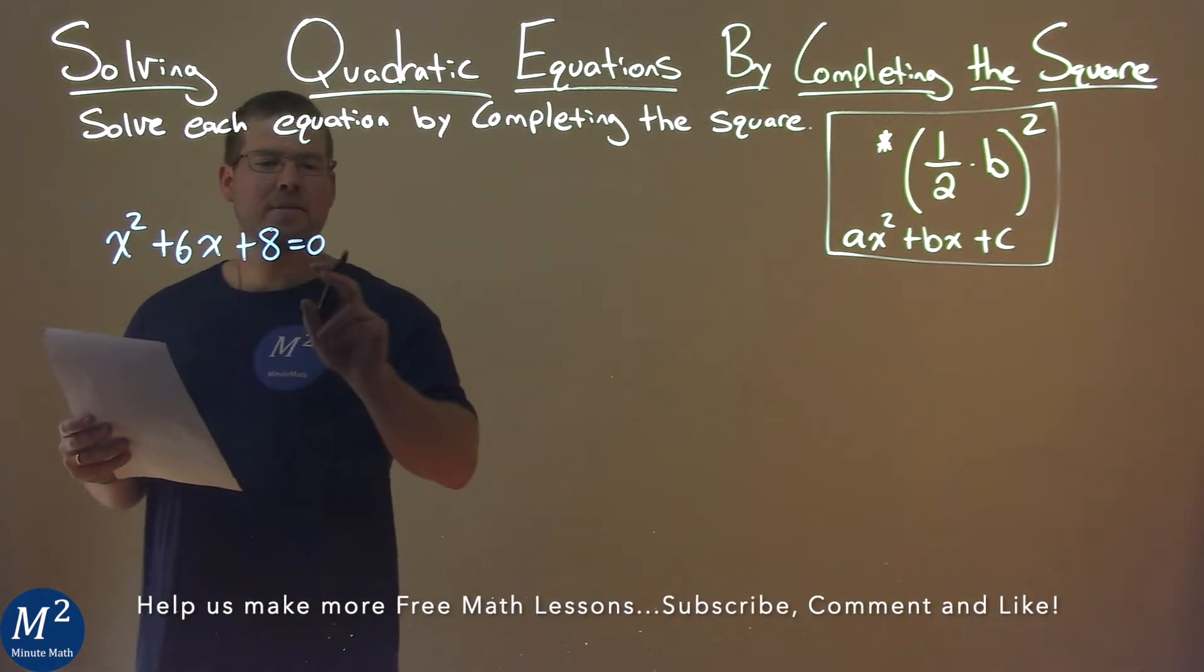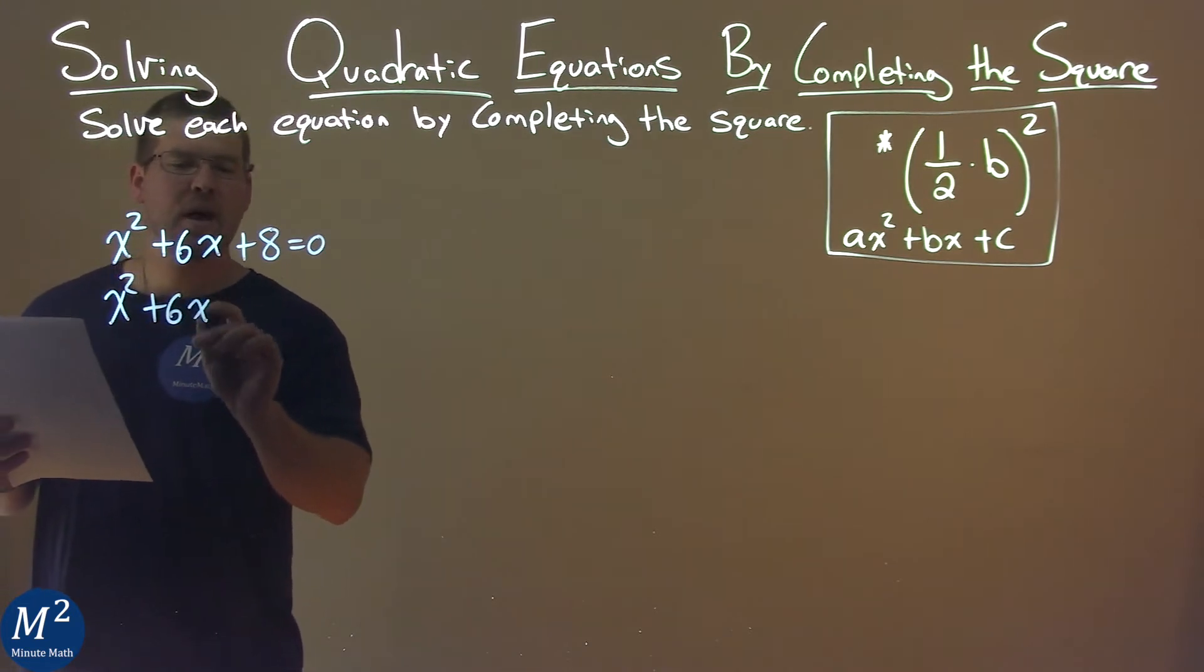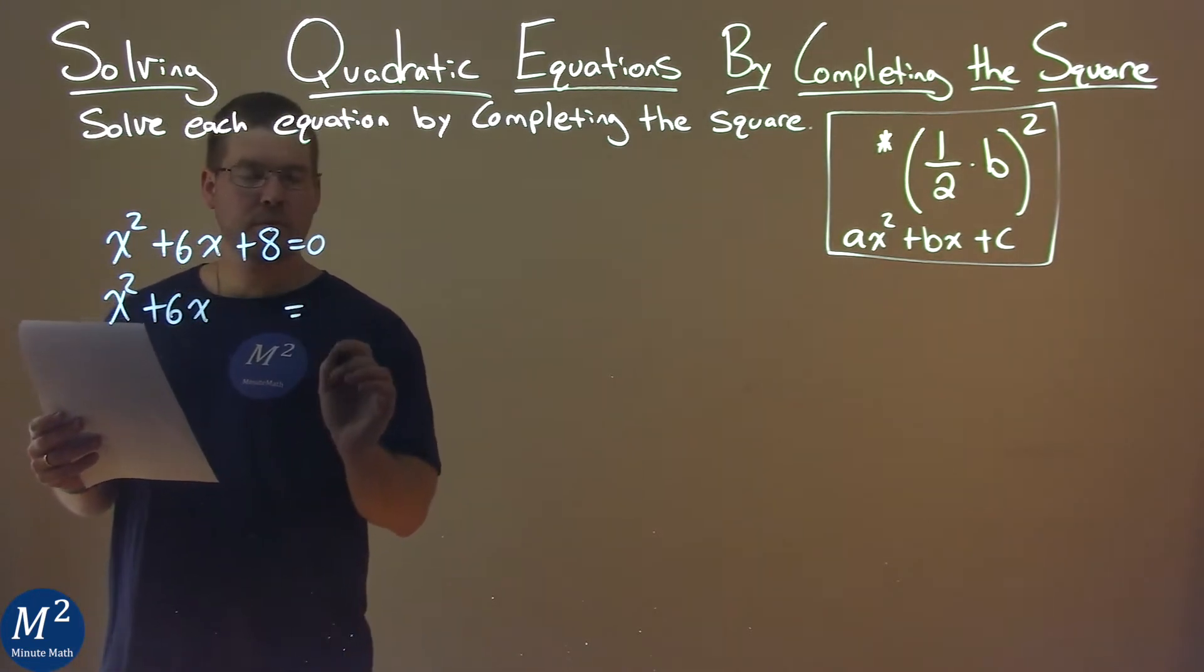First thing I'm going to do is I'm going to subtract 8 from both sides. So we have x squared plus 6x, and I'm going to leave myself some space, equals negative 8.